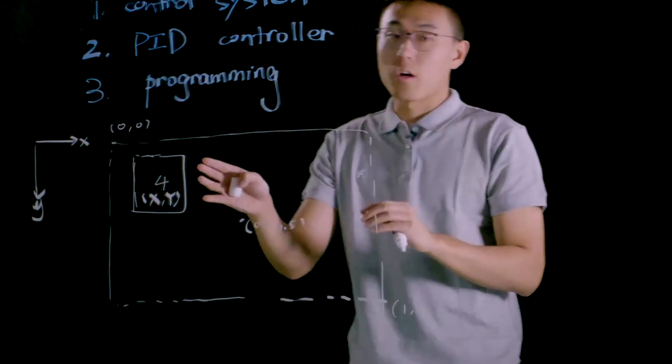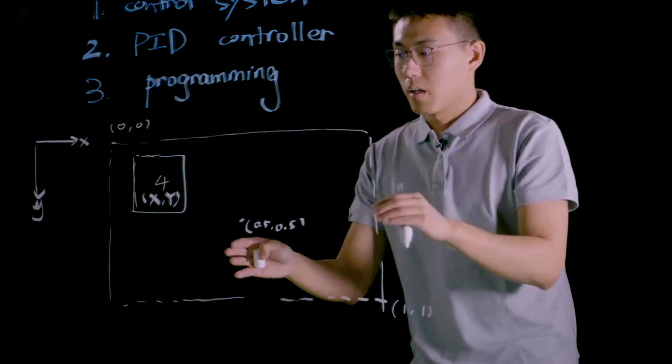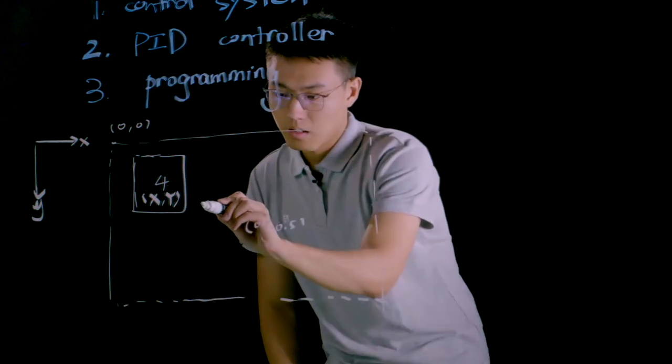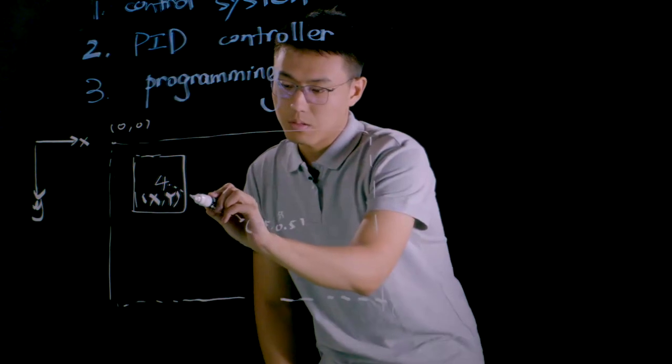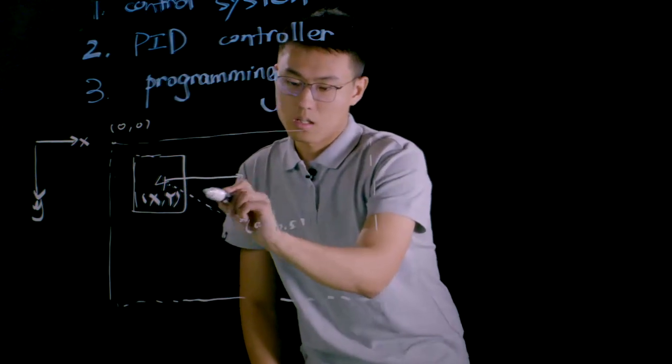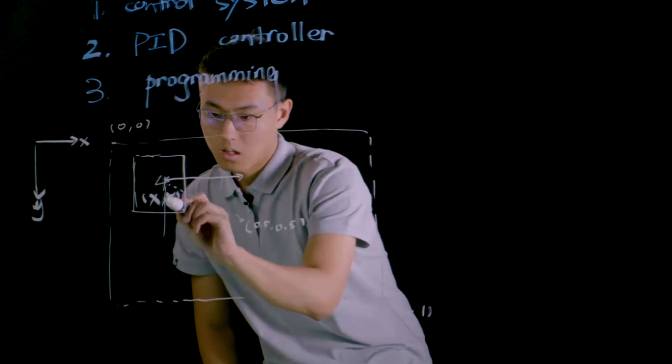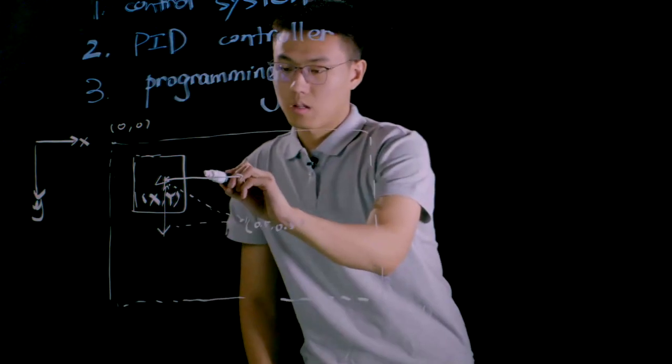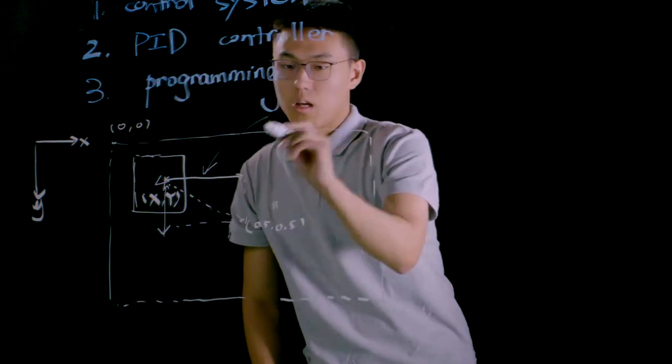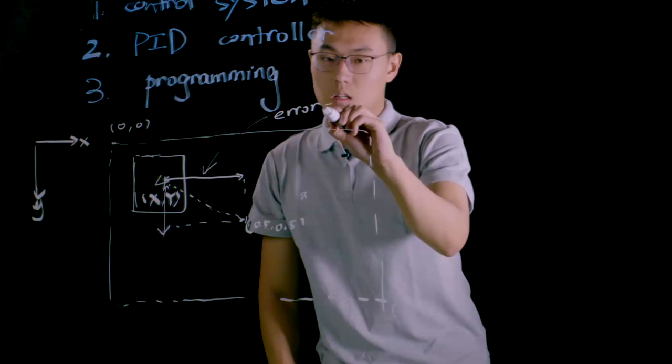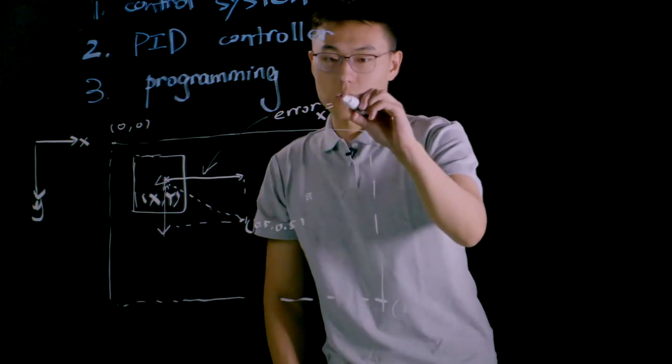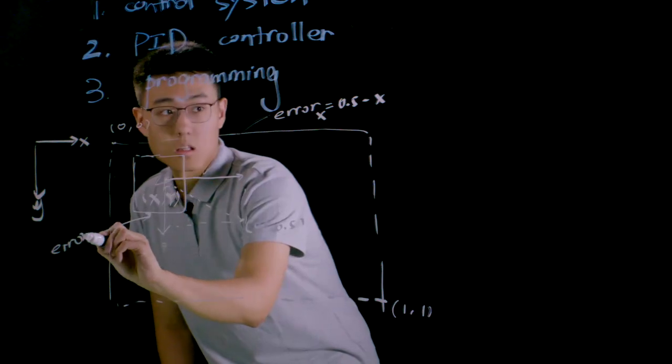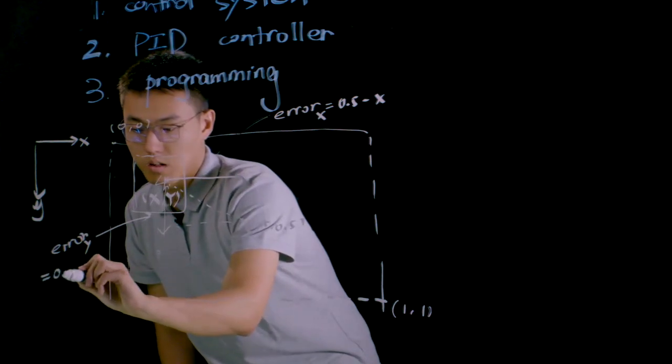So since we want to put this visual marker in the center of the viewport, obviously this is the error we want to eliminate. And we can decompose it into x direction and y direction. Therefore, the error in x direction equals to 0.5 minus x, and the error in y direction equals to 0.5 minus y.